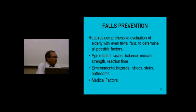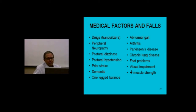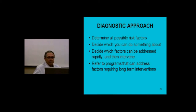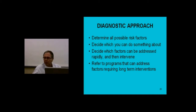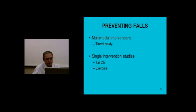You've also got to look at environmental hazards — that usually means calling up CCAC and getting an OT to go into the home. The medical factors are drugs, peripheral neuropathy, stroke — they're all straightforward. But once again, if you have four or more of these, you're overwhelmingly likely to fall over the next year. You've got to determine all possible risk factors, decide what you can do something about, decide which factors can be addressed rapidly, then intervene. Refer to programs that can address factors requiring long-term interventions — a rehab program, a day hospital, a formal exercise program. Mary Tinetti defined those risk factors and picked some amenable to physician intervention — blood pressure drops, sedative use, four or more drugs, impaired use of arms or legs — and showed tremendous risk reduction.